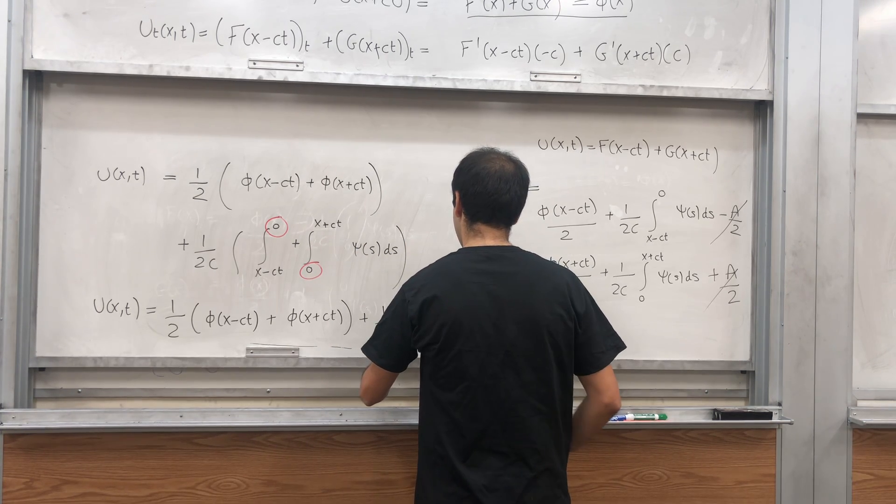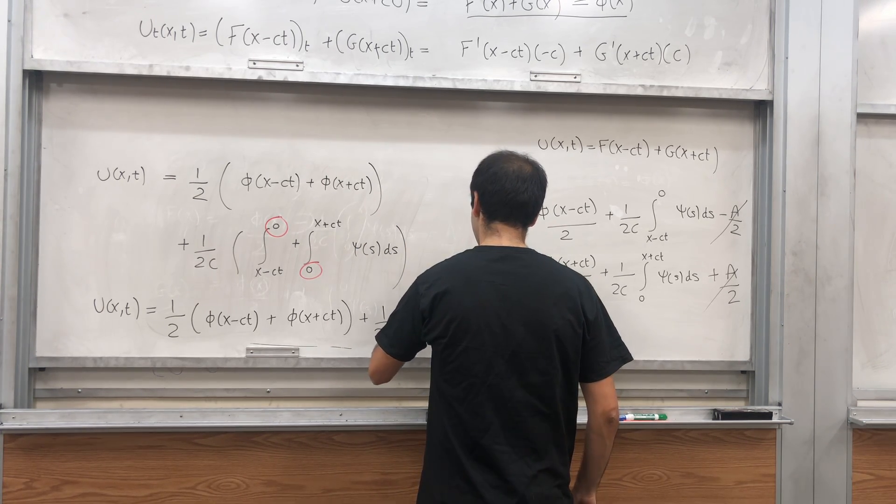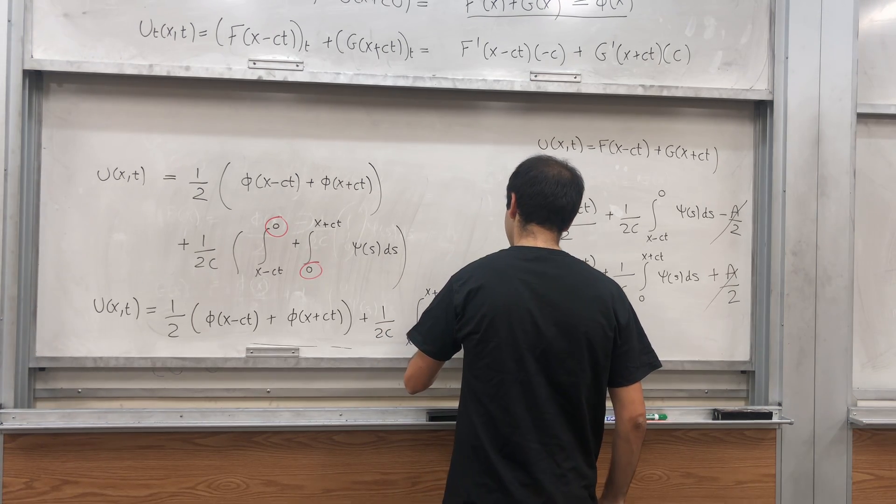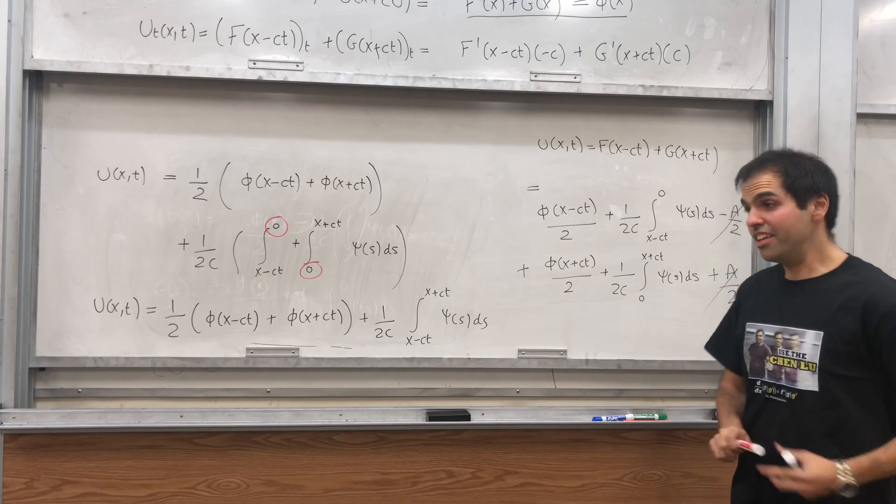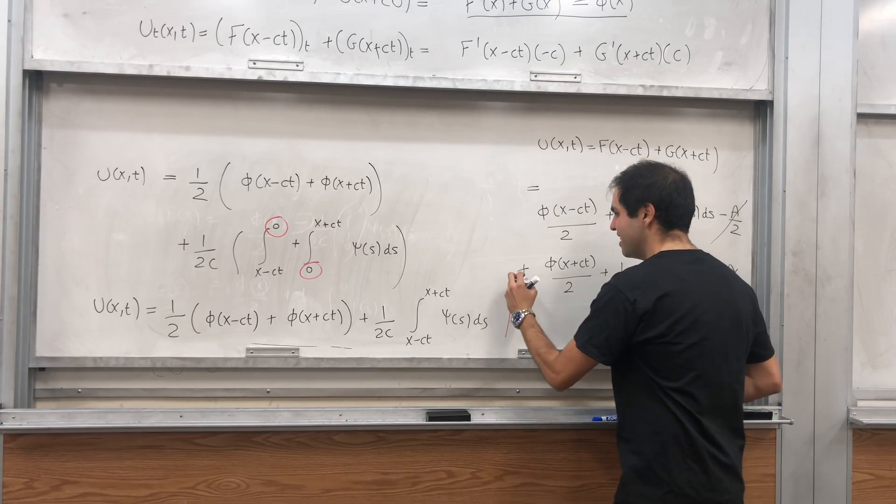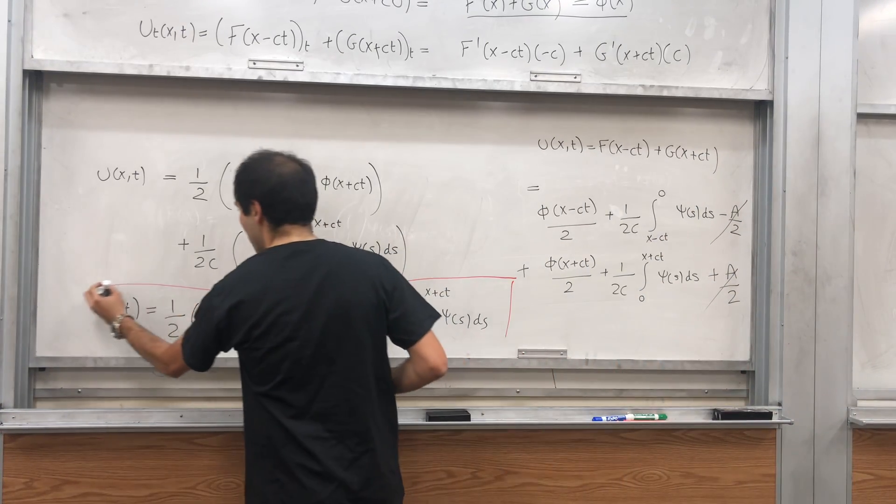Plus one over two C integral of x minus ct to x plus ct, psi of s ds. And this, ladies and gentlemen, is the famous d'Alembert formula.